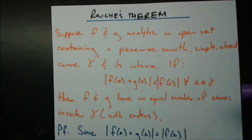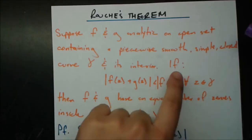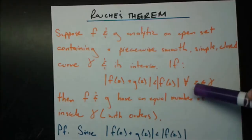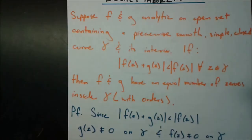The statement is: if the modulus of f(z) + g(z) is less than the modulus of f(z) for all z that lie on that closed curve gamma, then we can say f and g have the same number of zeros inside gamma — and you have to count orders.